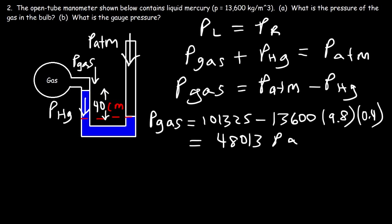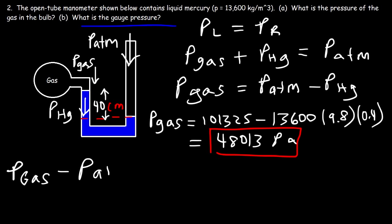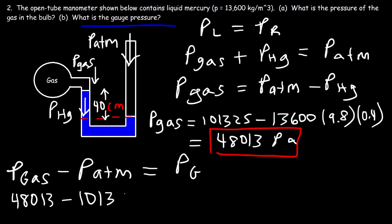Because the pressure of the gas in this problem is less than the atmospheric pressure, the gauge pressure is going to be negative. To calculate the negative gauge pressure, we take the difference between the pressure of the gas and the pressure of the atmosphere: 48,013 minus 101,325 equals negative 53,312 pascals.